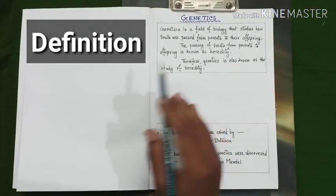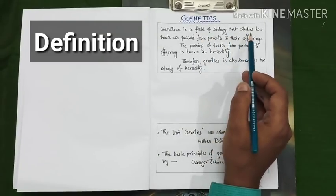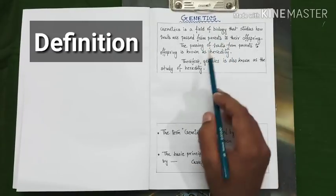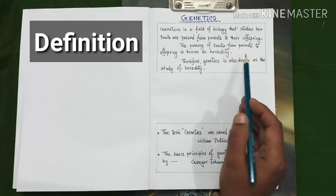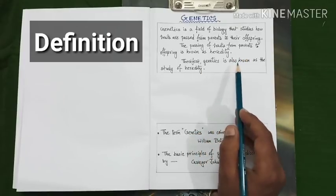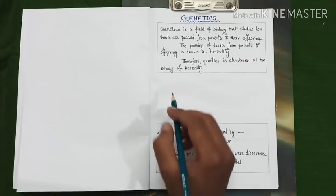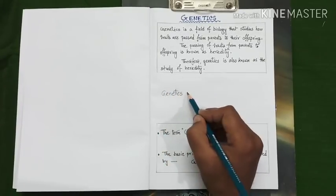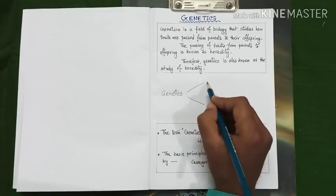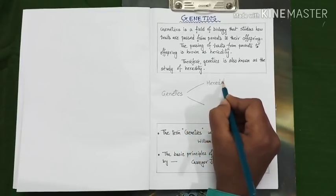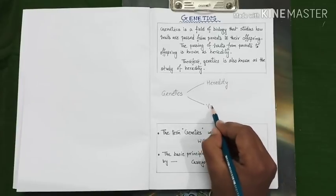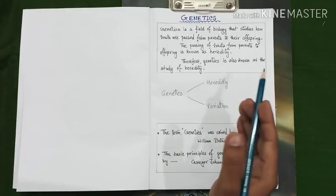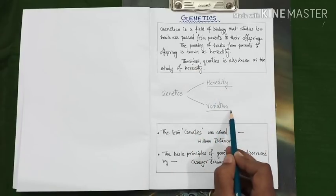Let's start with its definition. Genetics is a field of biology that studies how traits are passed from parents to their offspring. The passing of traits from parents to offspring is known as heredity. Therefore, genetics is also known as the study of heredity. This branch of biology, genetics, actually involves both these terms: heredity and variation. And if you want to understand genetics better, you need to know details about heredity and variation.